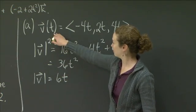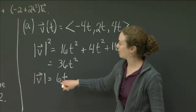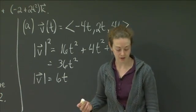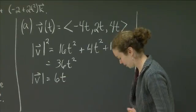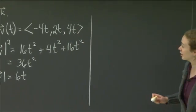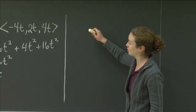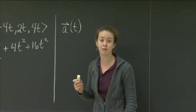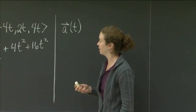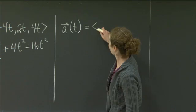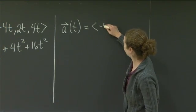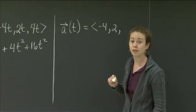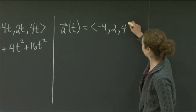Okay, so that's the velocity, that's the speed. Now I need to find the acceleration and I need to find the unit tangent vector. So let me come over here and I'll find the acceleration and the unit tangent vector. So the acceleration, if you remember, the acceleration is actually just the derivative of the velocity with respect to t. So the acceleration is going to be the derivative of -4t is just -4. The derivative of 2t is just 2, and the derivative of 4t is just 4, all with respect to t.